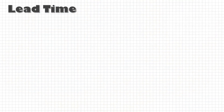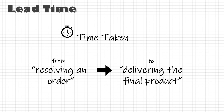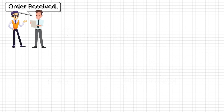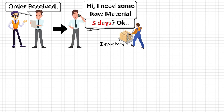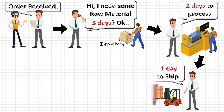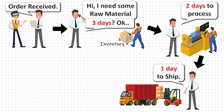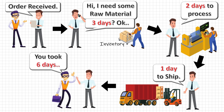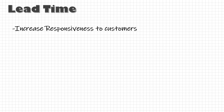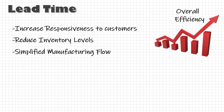On the other hand, lead time represents the time taken by an organization starting from the point of receiving an order to delivering the final product or service. From the customer's perspective, the lead time starts when he places the order. And while the organization is procuring the required material or manufacturing the product or doing the inspection and packaging, the customer is waiting. The lead time ends when he receives the first lot of the final product. Reducing this lead time means we improve the responsiveness to the customer, reduce inventory carrying cost, improve the manufacturing flow and enhance the overall operational efficiency.